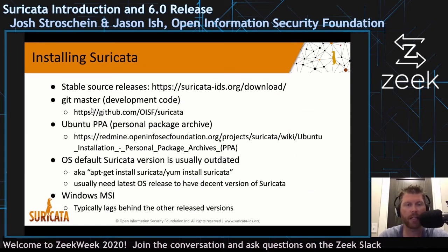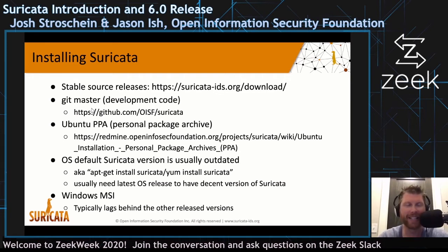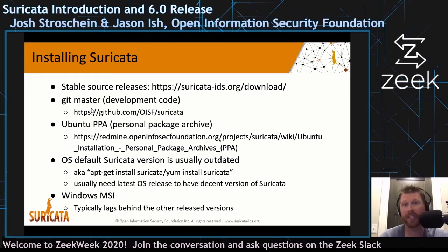Installing Suricata is relatively straightforward, with a lot of releases available in different package repositories. To get the latest version, you may need to add the Suricata repository, as a default apt install on Ubuntu will give you an older version. You can also compile from source, and there is even a Windows installer.